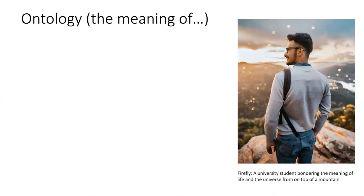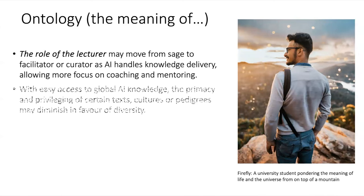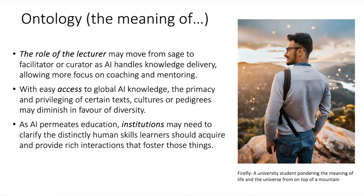Continuing on with ontology, the role of the lecturer may evolve from sage on the stage to more of a facilitator and curator, as AI will handle a lot of the knowledge delivery. That does allow us as academics and teachers to spend more time on coaching, mentoring, and giving formative feedback. With easy access to global AI knowledge, the primary privileging of certain texts, cultures, and pedagogies may diminish in favor of diversity — that would be good. As generative AI permeates education, we may need to clarify the distinctly human skills learners should acquire and provide rich interactions that foster some of these things.